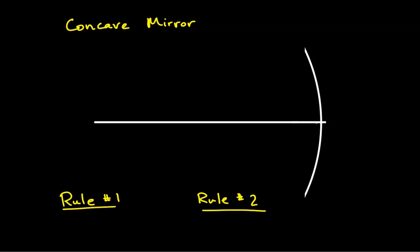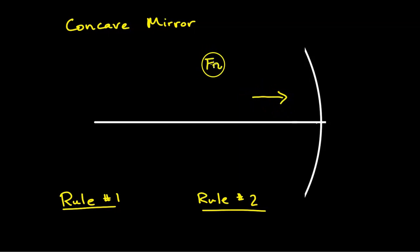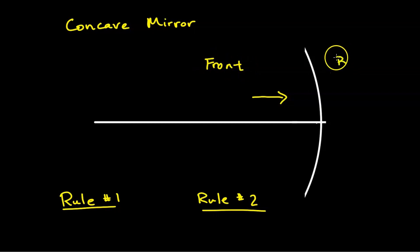In this video, you'll learn how to draw ray diagrams for concave and convex mirrors. We'll start with a concave mirror. This is a concave mirror — you can imagine yourself walking into a cave. This is going to be the front part of our mirror, where we're going to put the object, and this is going to be the back side of our mirror.